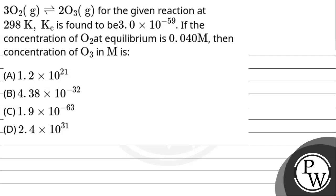Hello, let's read this question and then we will solve it. This question is given as: 3 moles of oxygen in gaseous form are in equilibrium with 2 moles of ozone in gaseous form. For the given reaction at 298 Kelvin, the equilibrium constant Kc is found to be 3 × 10⁻⁵⁹. If concentration of O₂ at equilibrium is 0.040 molar, then find the concentration of O₃ in molar.